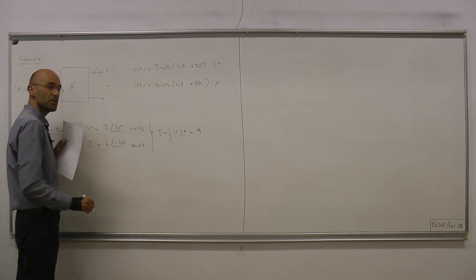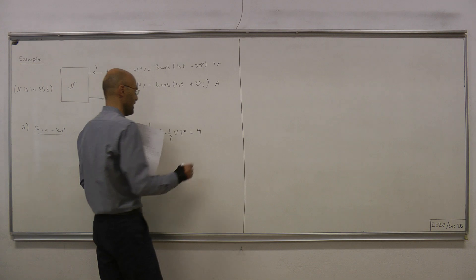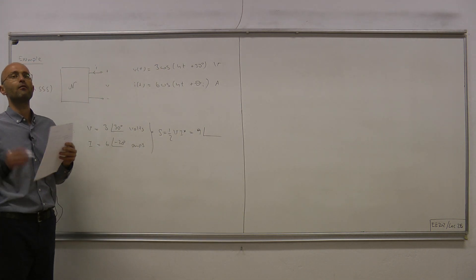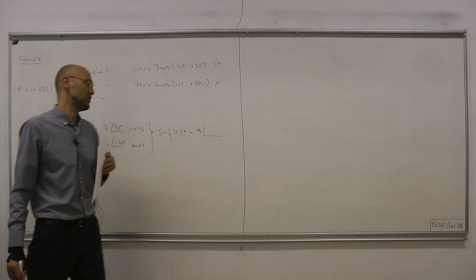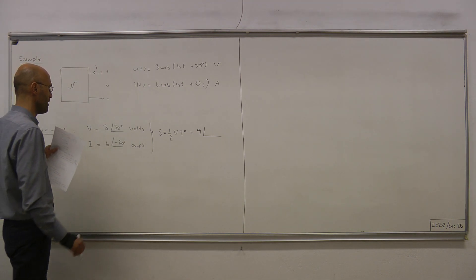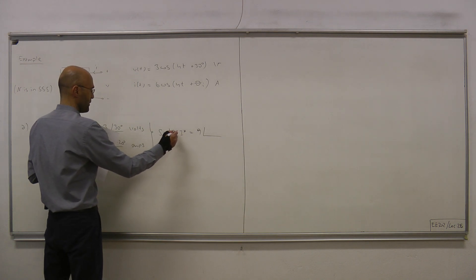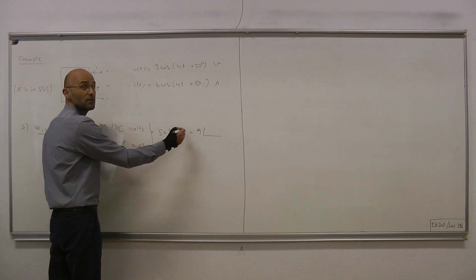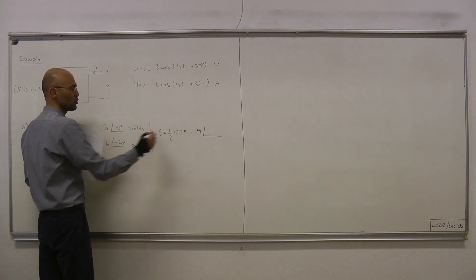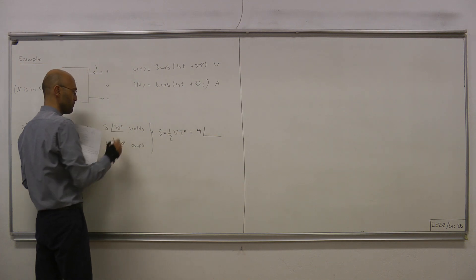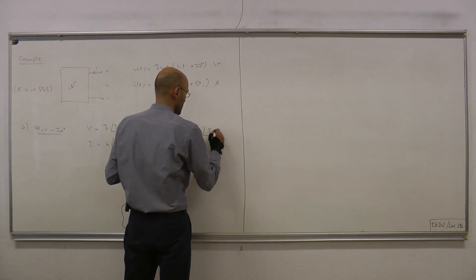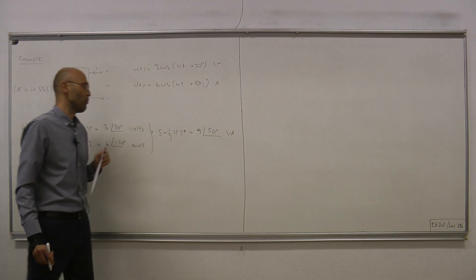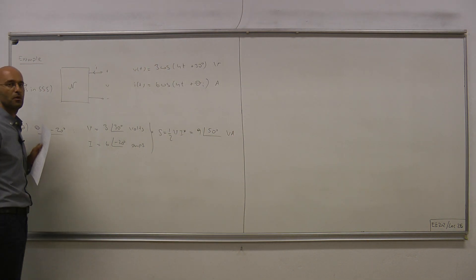So S equals ½ times 3 times 6 equals 9, which is the magnitude of the complex power — the apparent power is 9 volt-amps. For the phase, we have 30 degrees from V, and since we take the conjugate of I we add minus(−20) = +20, giving 30 + 20 = 50 degrees. So S = 9∠50° volt-amps.